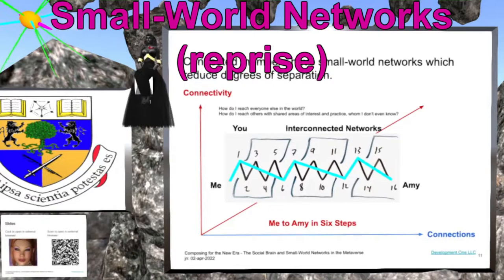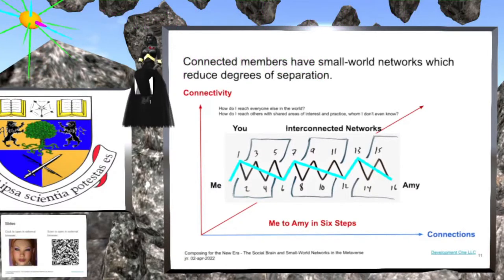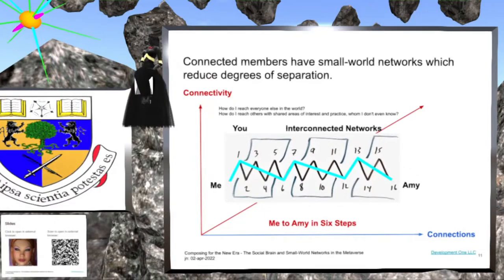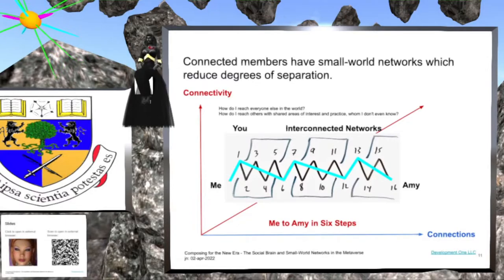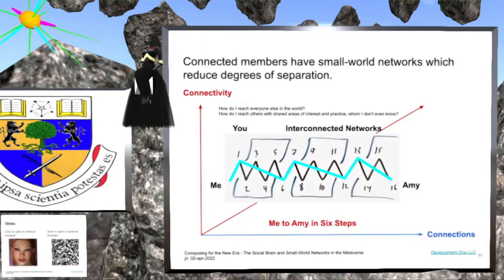Connected members have small world networks which reduce degrees of separation. You are actually part of a small world network consisting of members 2, 3, 4, 5, and 6. Member 6 knows somebody named 7, who is part of another small world network of members 8 through 12. Member 12 knows somebody named 13, who is part of a third small network to which Amy belongs. Using shortcuts, it would now take us only 6 steps to reach Amy. Hooray!